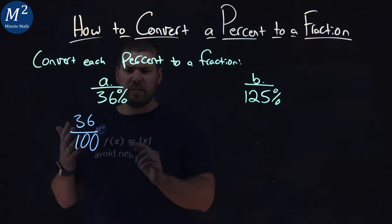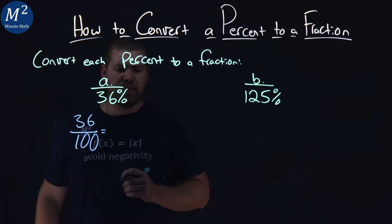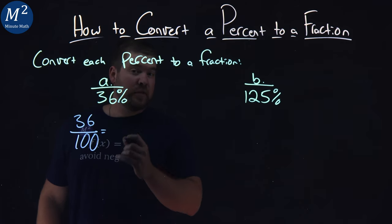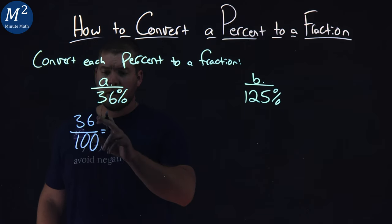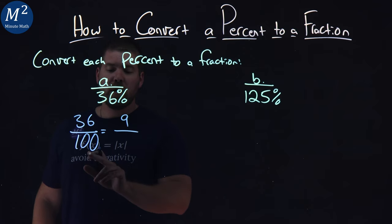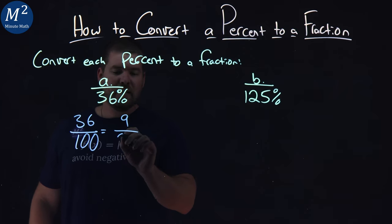Now we've got to simplify that. 36 over 100. Well, both numbers are divisible by 4. 36 divided by 4 is 9, and 100 divided by 4 is 25.